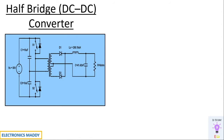This is the circuit diagram of a half bridge DC to DC converter. It is basically used to increase or decrease the voltage — buck or boost mode of operation can be achieved by suitably selecting the turns ratio of the transformer. It only contains two switches, whereas in case of a full bridge DC to DC converter it basically contains four switches. So that is one of the major differences between them.